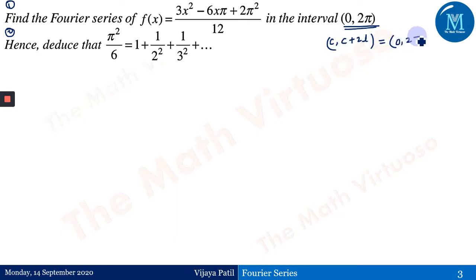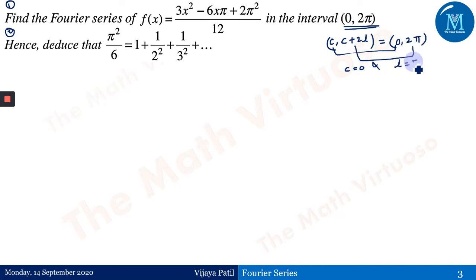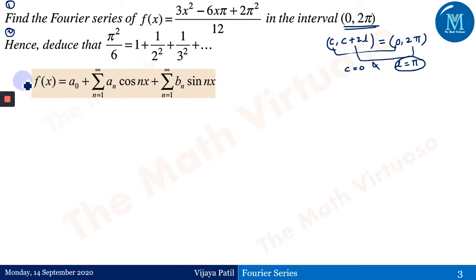Comparing 0 to 2π with c to c+2l gives us c equals 0 and c+2l equals 2π, which means l equals π. This is very important to understand — what is the value of l — because in Euler's formula we have cos(nπx/l), so understanding l is critical everywhere. With l = π, the π cancels and we remain with cos(nx).